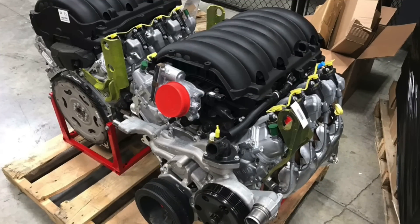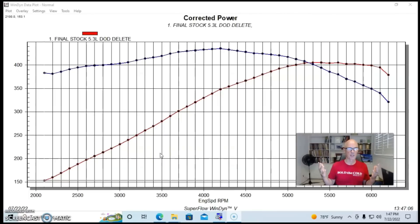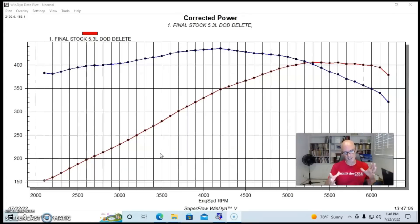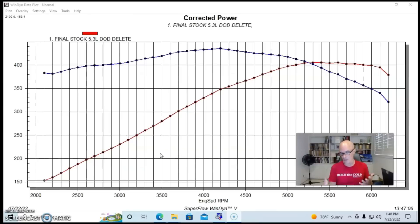Before we get to our test on the LV3, I wanted to do a very quick test and show you what happened when the guys from Brian Tooley Racing did testing on the L83, which is the 5.3 liter V8. The reason I want to show you that is because the cam technology that they're using for the LV3 actually came from this 5.3 liter testing, so it worked out very well.